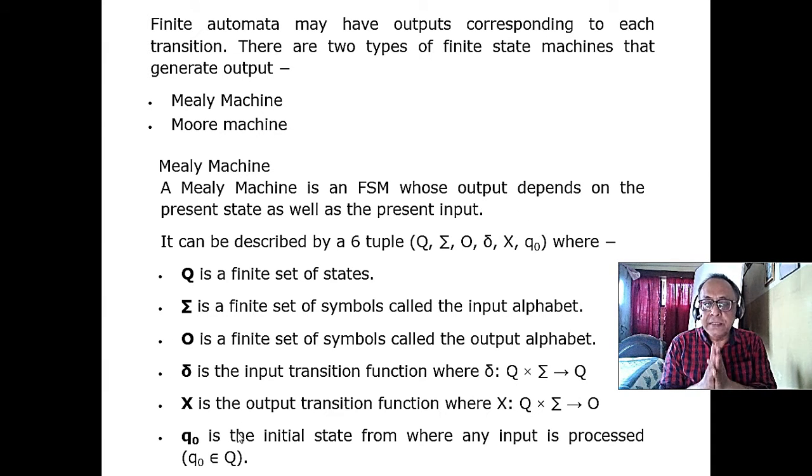What is missing here? We are not saying whether the string is accepted or rejected, so we do not have any F here. That is missing. But two extra things we have: one thing is the output alphabet other than input, and another is X is the output transition function.